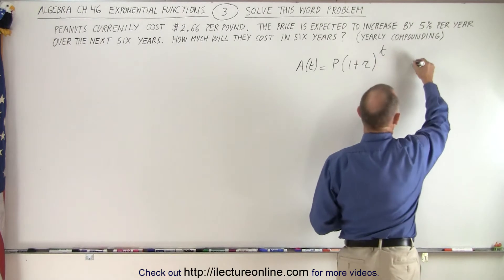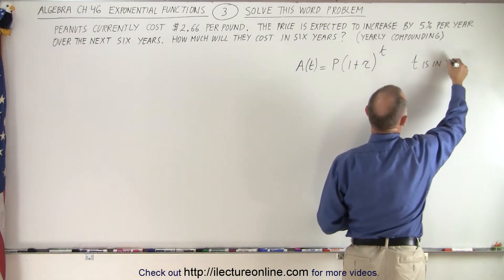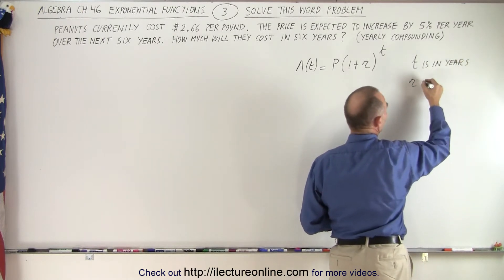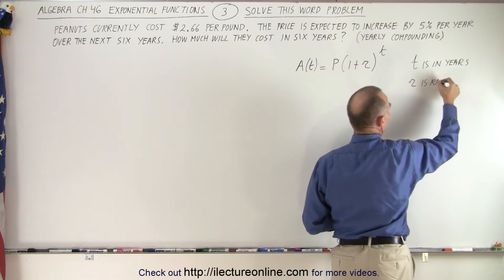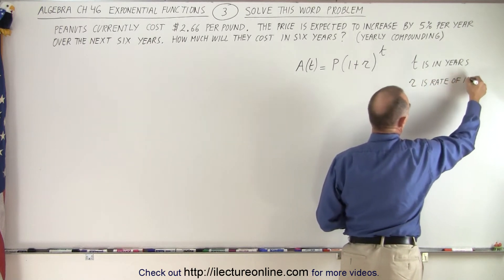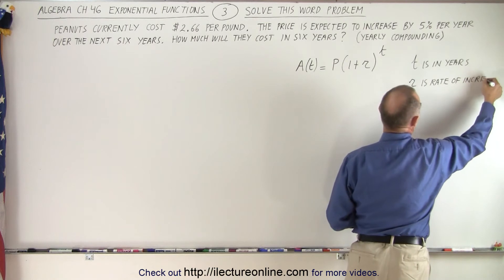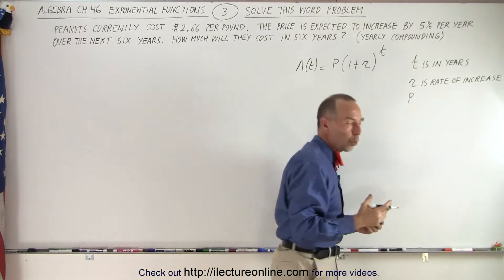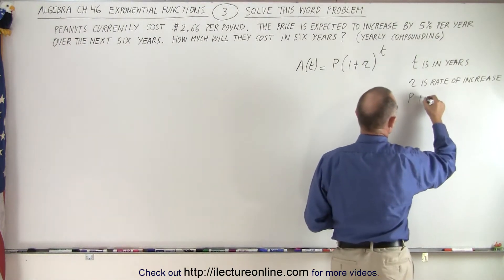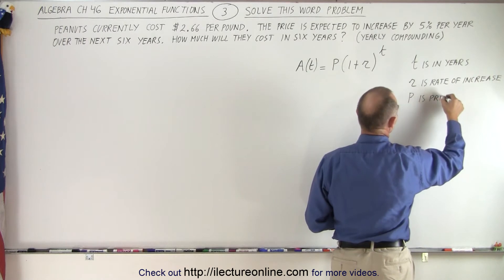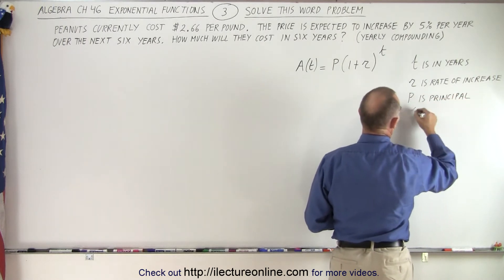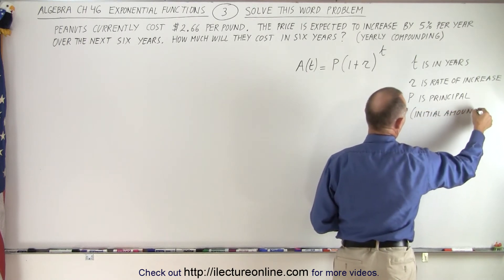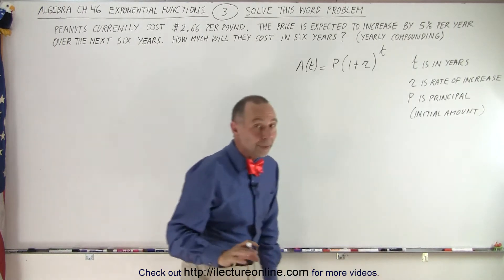t is in years, r is the rate of increase, and P is what we call the principal, or initial amount.